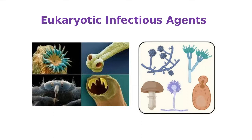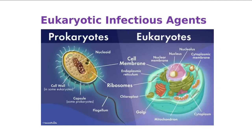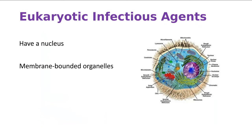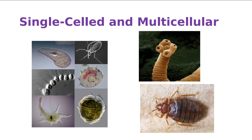If we look at the eukaryotic infectious agents, we're going to be focusing on organisms that have a nucleus. We're going to be looking a lot at bacteria in this course and lab, but today in lab, because of the challenges we're facing, we've moved the eukaryotic organisms up. It's really important for us to understand that eukaryotic infectious agents have a nucleus and membrane-bounded organelles. We're going to be looking at single-celled and multicellular organisms.